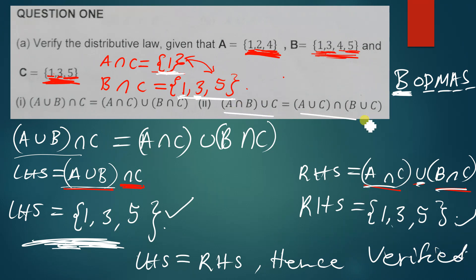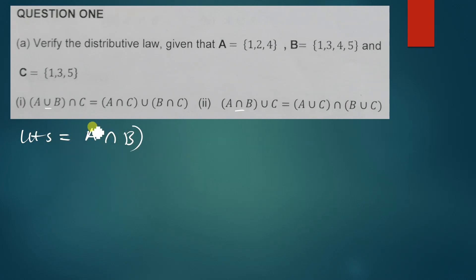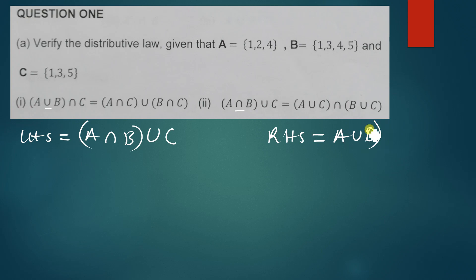Let's also look at the other part of this question. We are going to verify that A intersection B union C equals A union C intersection B union C. We take the left hand side as A intersection B union C, and the right hand side is A union C intersection B union C.